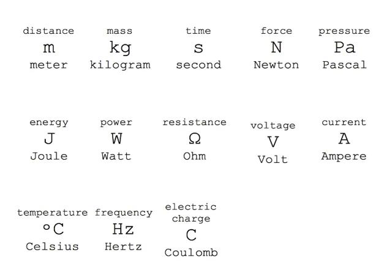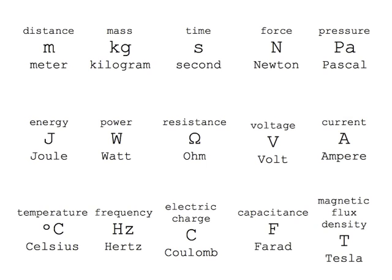To measure electric charge, we commonly use the Coulomb, abbreviated by an uppercase C. To measure capacitance, we commonly use the unit Farad, abbreviated by an uppercase F. Lastly, to measure magnetic flux density, we commonly use the unit Tesla, named after Nikola Tesla, and abbreviated by an uppercase T.